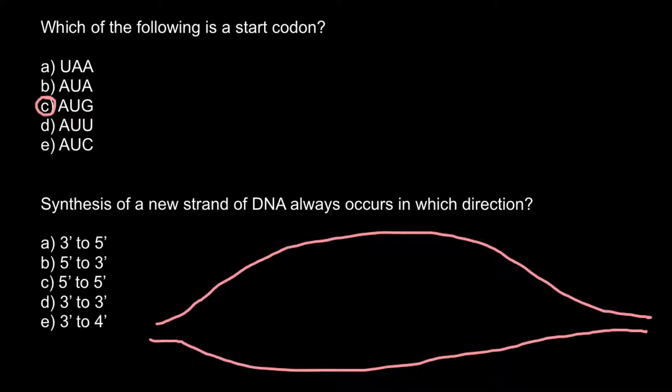So replication bubble somewhere here and here our replication bubble started to separate. And for example, if we would have five prime end here, so here we would have three prime end and three prime end here and five prime end here.